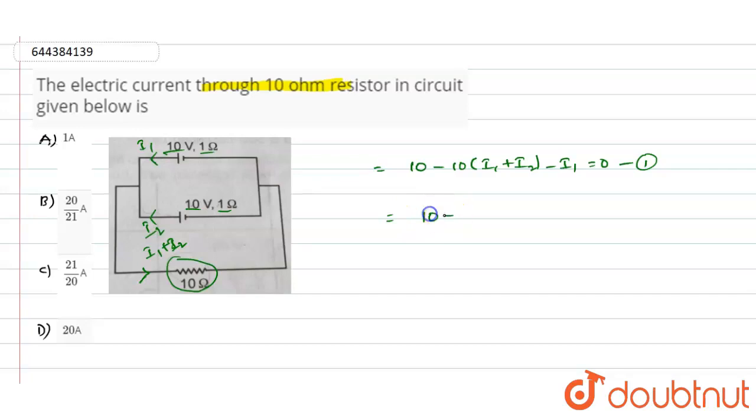And we will write one more equation which is 10 minus 11 into i1 minus 10 into i2, so that will be equals to 0. Let us suppose this as equation number two. Both of these equations are due to the upper cell, due to this particular battery.